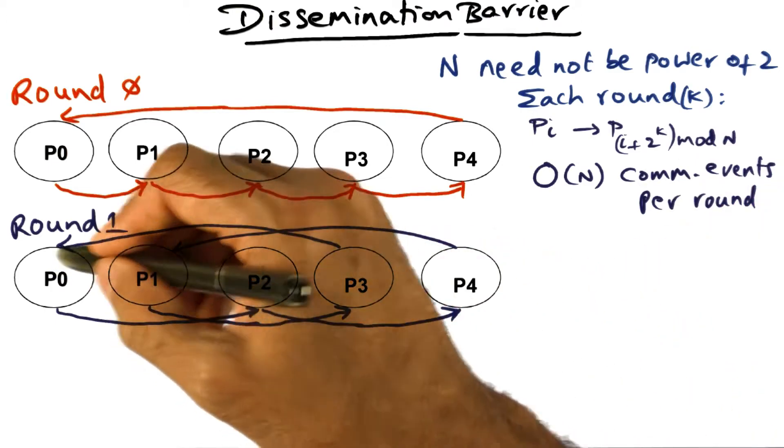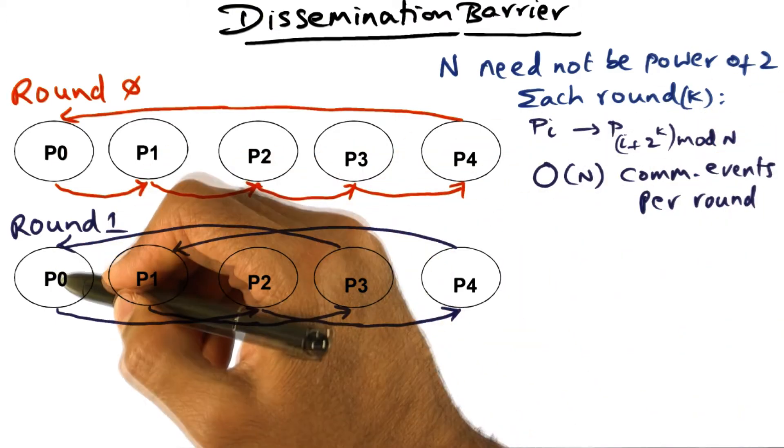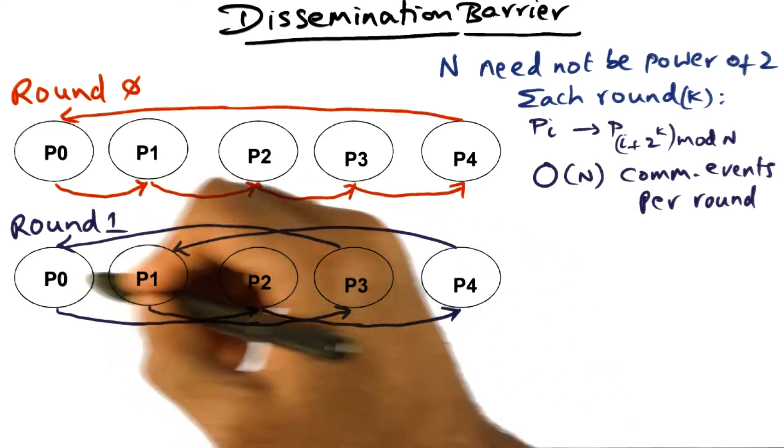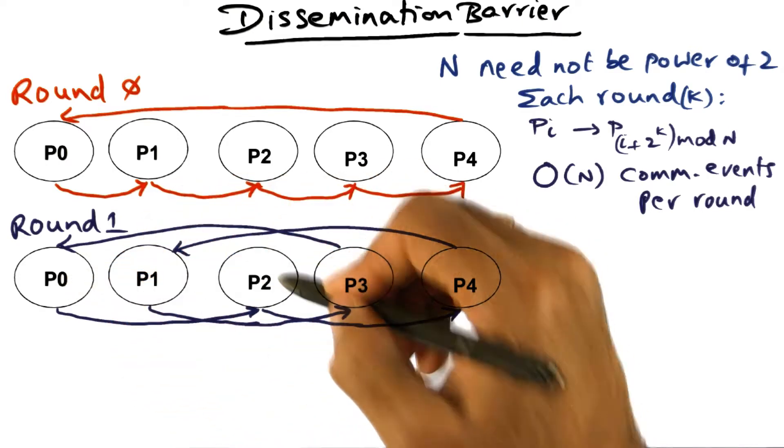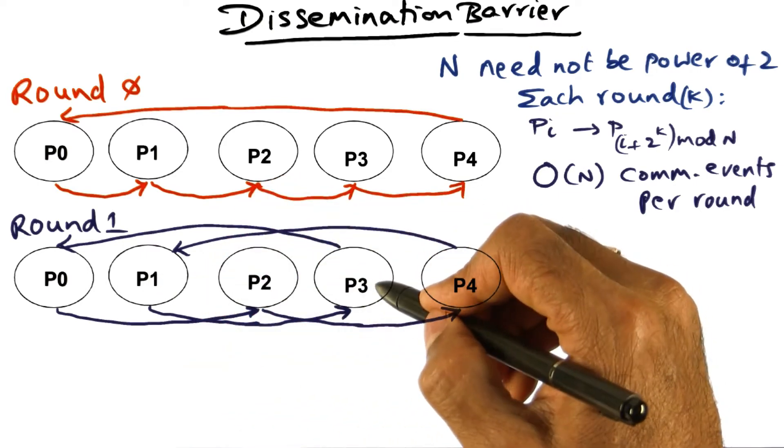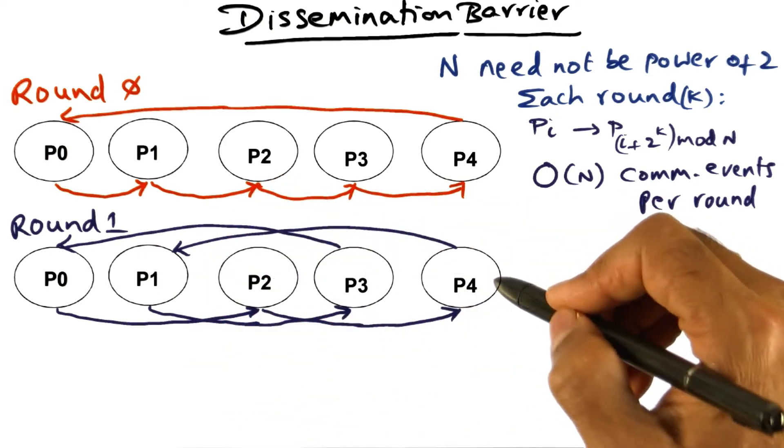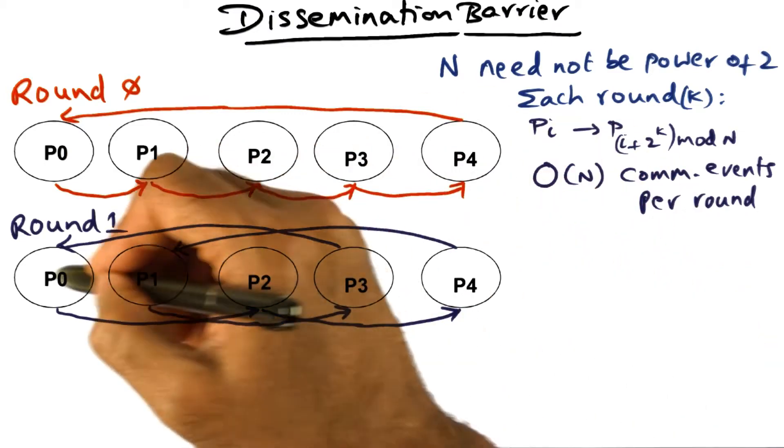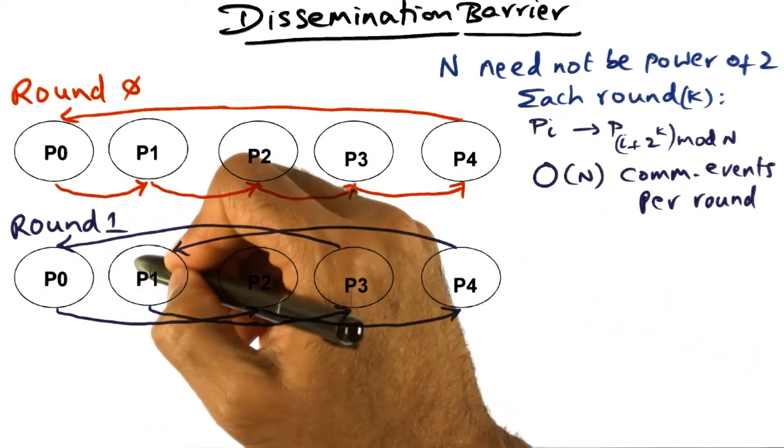And now, in round 1, k is 1, and therefore p0 is going to be sending a message to a neighbor that is two distant from it. So p0 sends to p2, and similarly p1, two distant from it, sends to p3. p2, two distant from it in cyclic order, is going to be p1. So it's sending a message to p1.